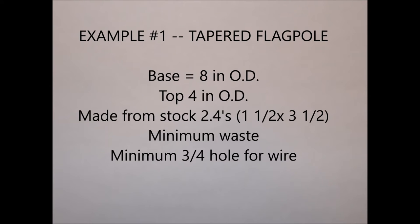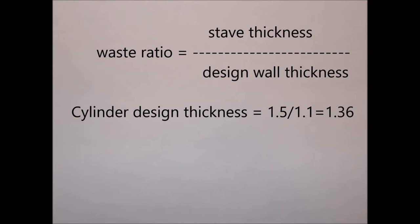Example 1: we want to build a tapered flagpole, tapering from 8 inches at the base to 4 inches at the top, using off-the-shelf 2x4s — actually 1.5 by 3.5 inches. We want minimum waste, leaving a hole of at least 3/4 inch for an electrical wire. A 20-foot 2x4 will be long enough, so no scarfing is necessary. We are given the stave thickness of 1.5 inches. We insist on a waste ratio of less than 1.1, and solving for the design cylinder thickness we get 1.36 inches.